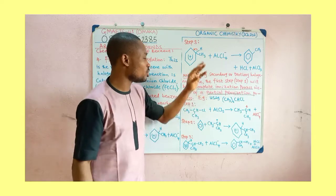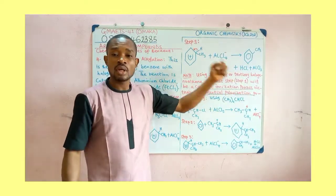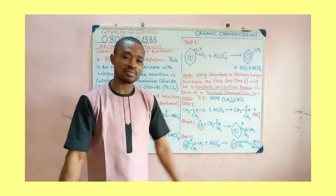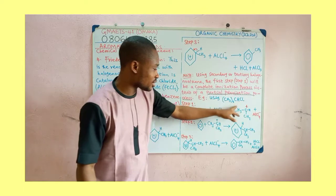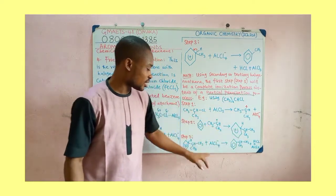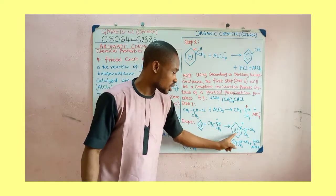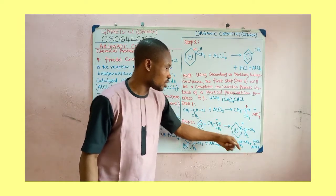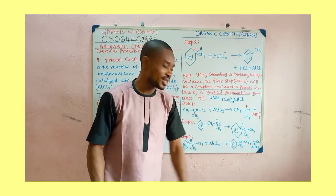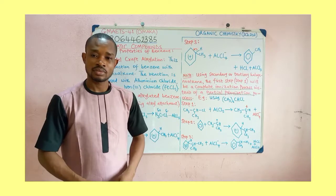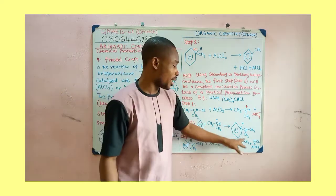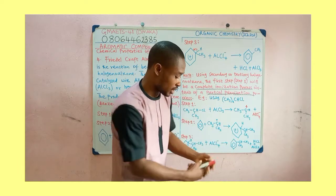That is just the difference between using secondary or tertiary haloalkane versus primary. The remaining steps — step 2 and step 3 — are the same. This completely ionized compound, the carbocation alkyl, will now attack the benzene ring. In the next stage, the arenium ion will transfer the proton to the catalyst. And then you get the alkylated benzene. We can call this compound 2-phenylpropane, because the benzene is attached to the second carbon of the carbon chain.